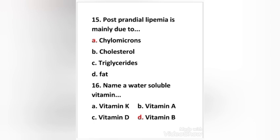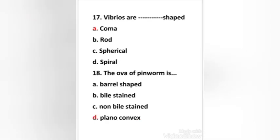Next question: vibrios are which shape in nature — comma, rod, spherical, or spiral? The right answer is option A — vibrios are comma-shaped.